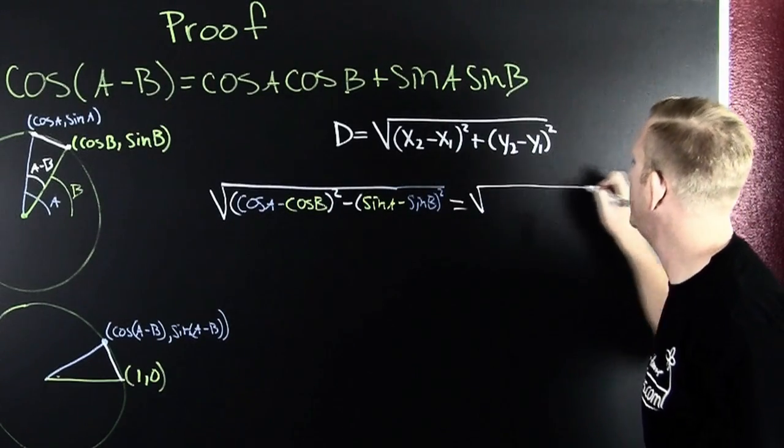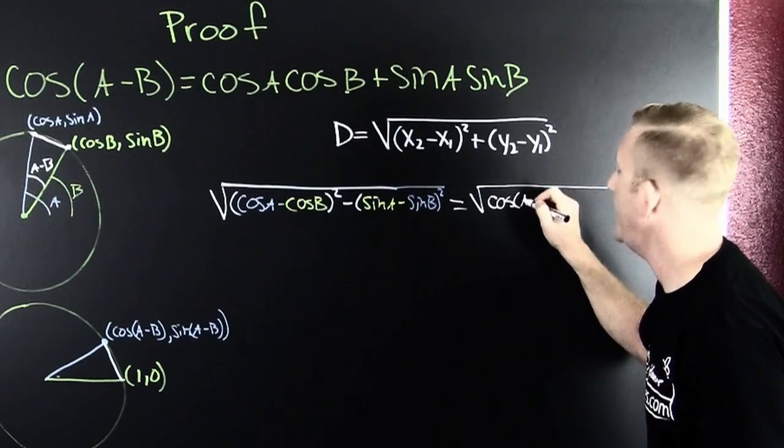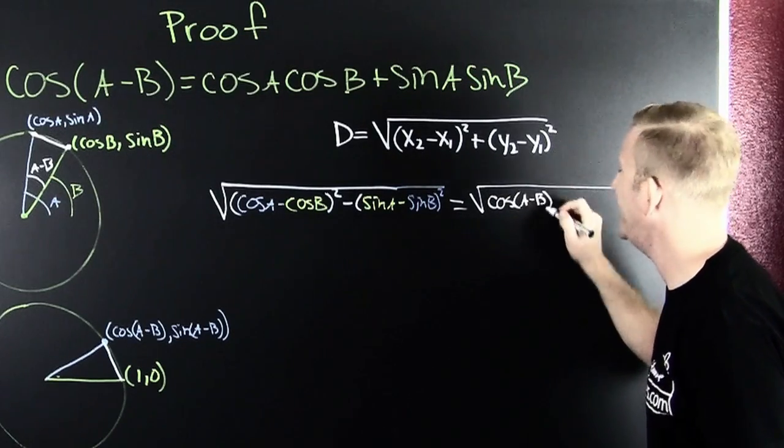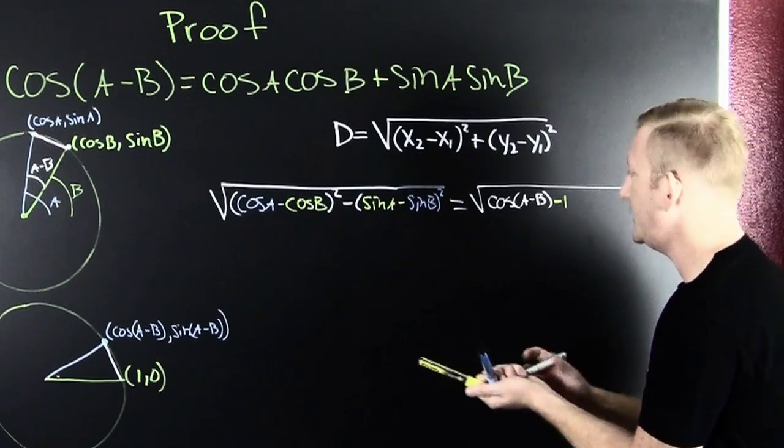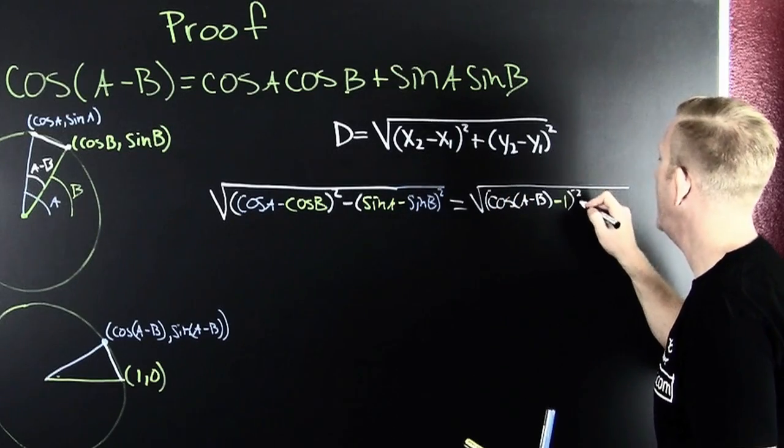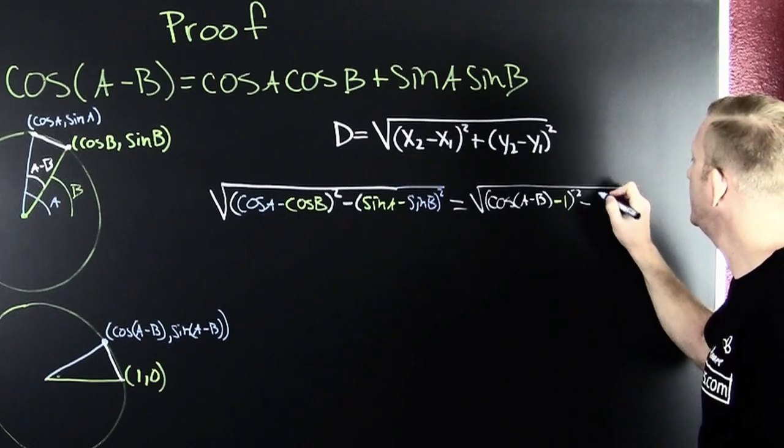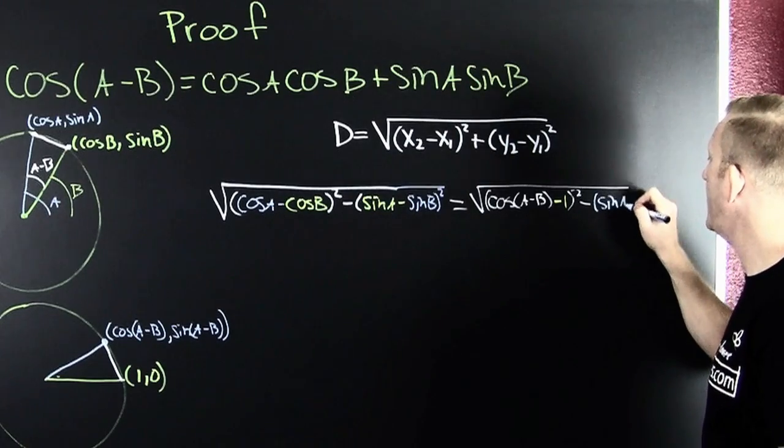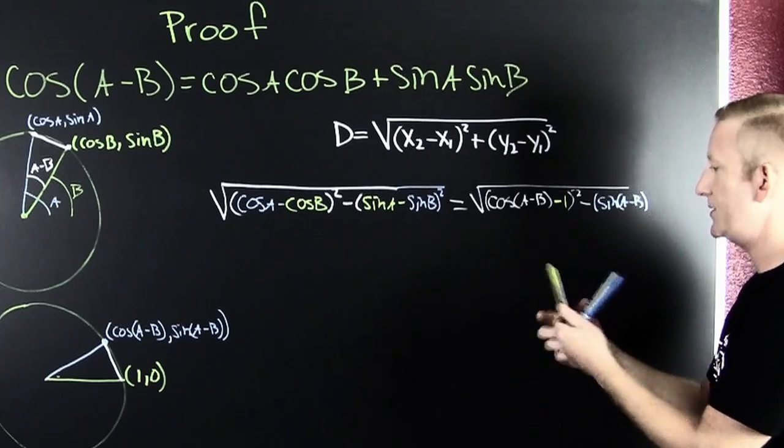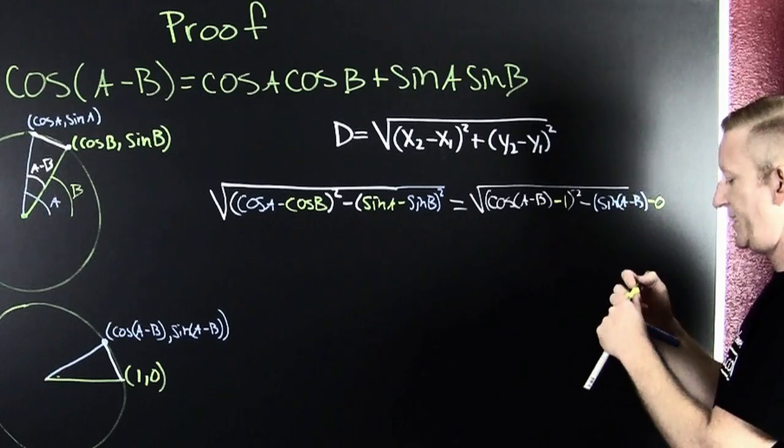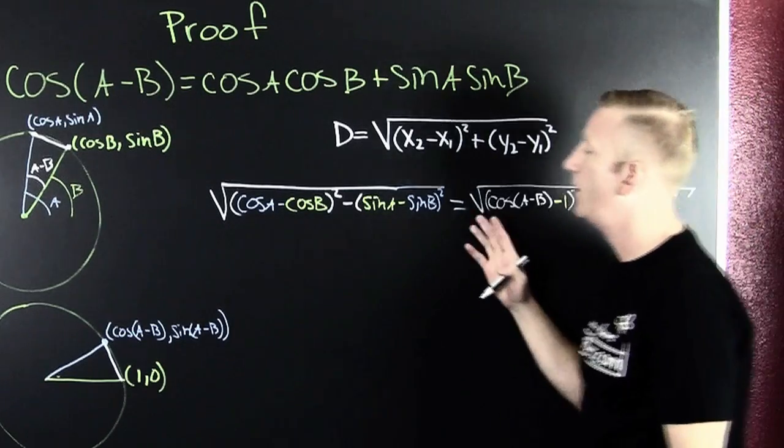So then, that's the square root of the differences of the X's. That's the cosine of A minus B, and that should have been in blue, minus one. That whole thing is going to be squared. And then minus the differences in the Y's. So then this one's in blue. This is the sine of A minus B. Parenthesis, minus zero. And then that thing is going to be squared. Get that root right over there.